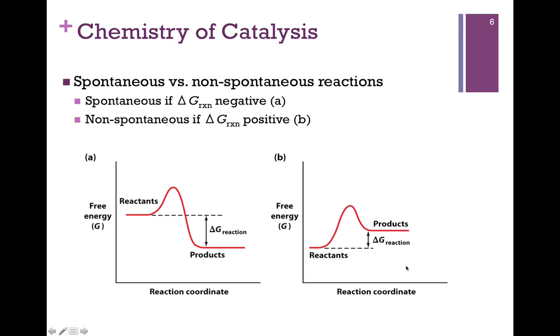On the far right, we see the case of a non-spontaneous reaction, where the products are at a higher energy level than the reactants, and so we had to actually input energy to make that happen. That would be a positive delta G.